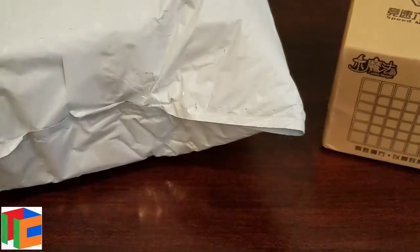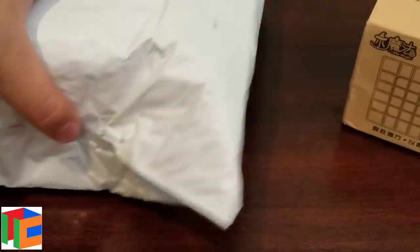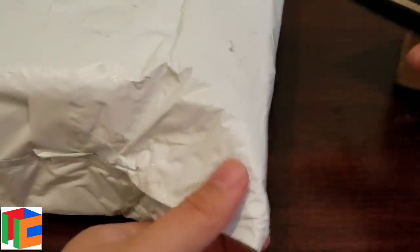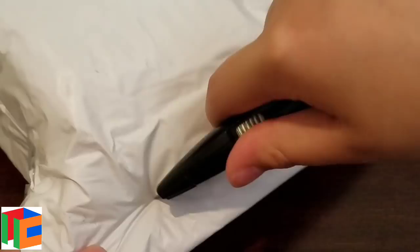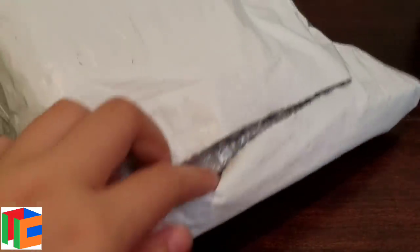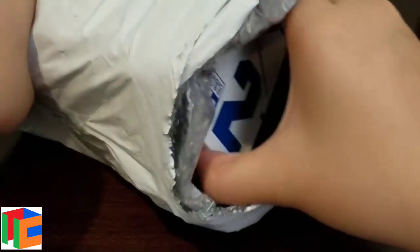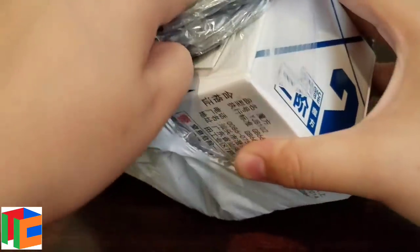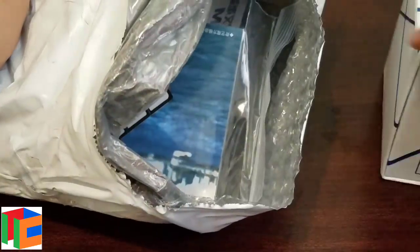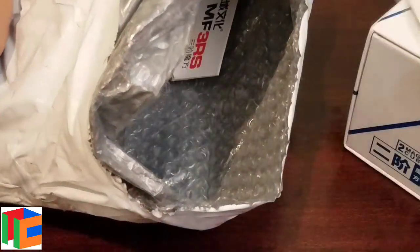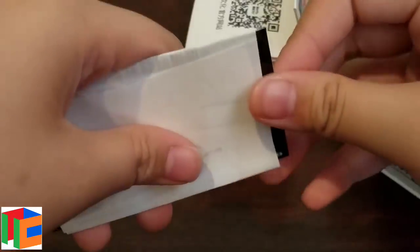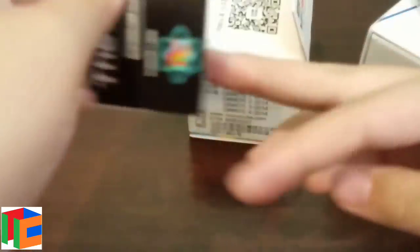Pretty cool budget 6x6, it was only $14.99. And this here I believe contains the YJ MGC, which I'm super excited for. So it contains, yep, the YJ MGC 2x2, and I got an MF3RS and a cubicle gift business card.